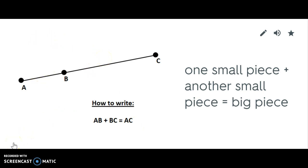So remember, congruency is with shapes. Equal signs are with numbers. And segment addition is one small piece plus the other small piece equals the big piece.